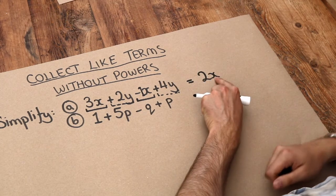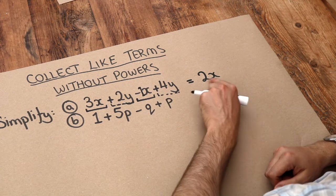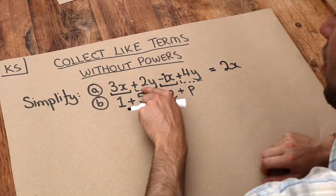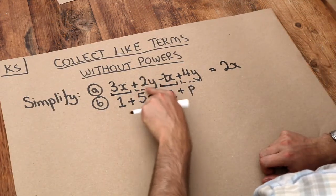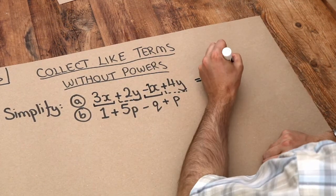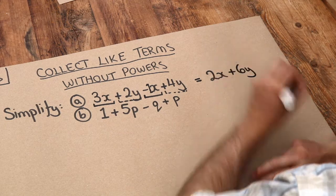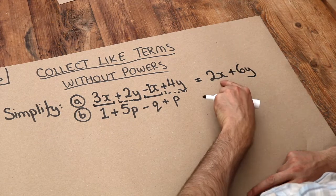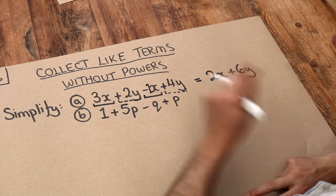Remember when you write things next to each other in algebra it means you're multiplying them together. Then let's look at the y terms. We've got two lots of y and we're adding four lots of y. That's six lots of y. So the final answer is 2x plus 6y and we can't simplify that any further.